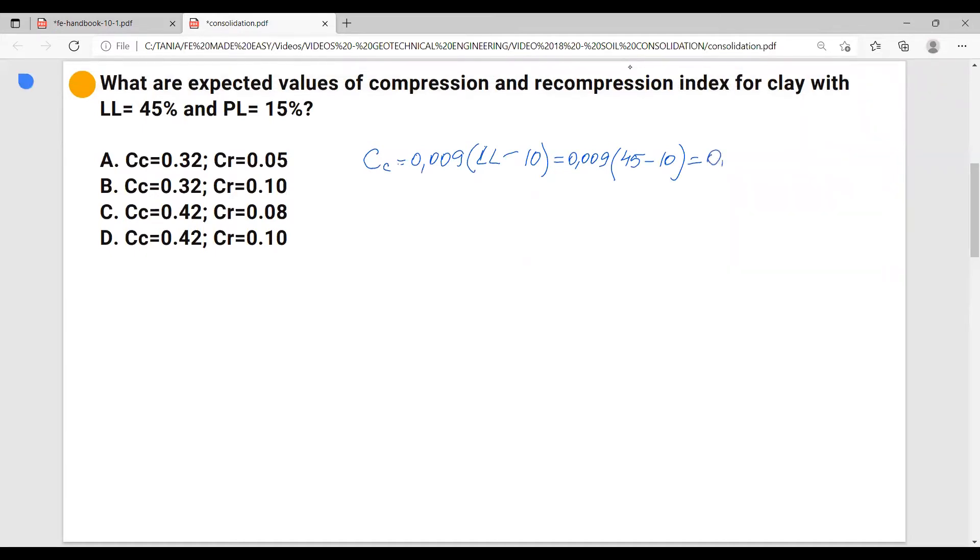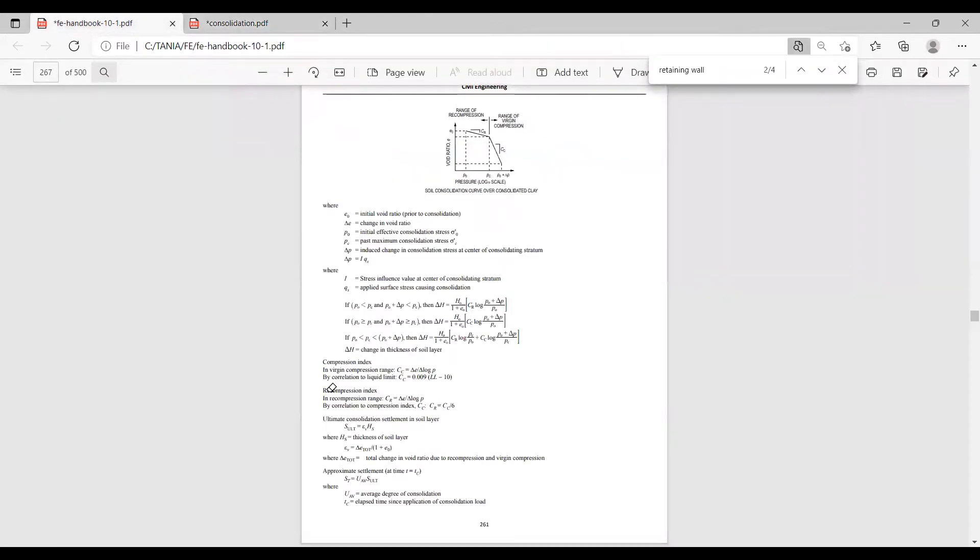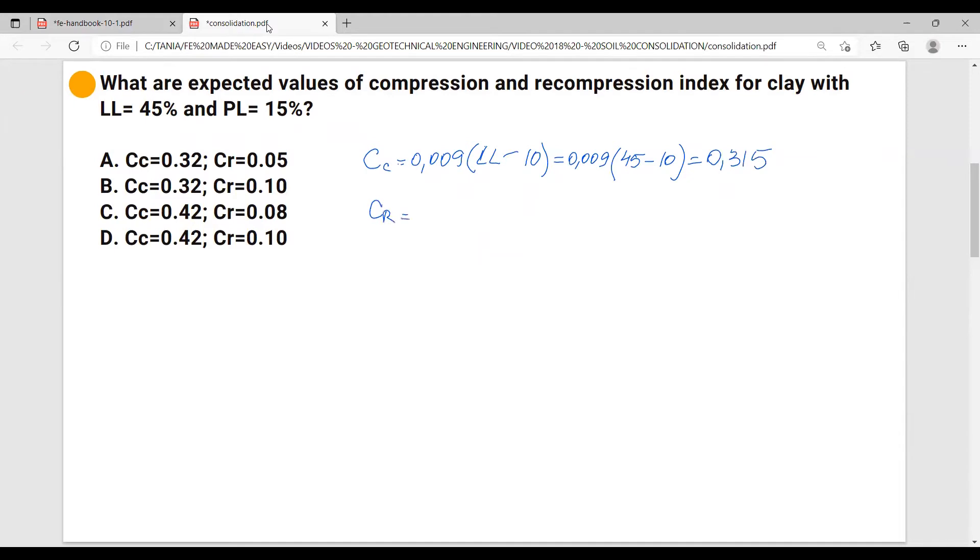And now let's calculate the coefficient or recompression index CR, which we have a formula here. CR is calculated in relation to CC, CC over 6. So CR equals CC over 6, so we have 0.315 over 6 equals 0.0525. So we have approximately 0.32 and 0.05.